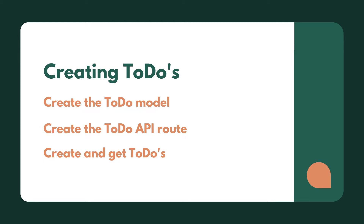Welcome back to another lesson. In this lesson we're going to take a look at creating to-dos. There are a few things we need to do: we need to create the to-do model, we need to create the to-do API route, and then we actually need to physically create and get to-dos via API routes.